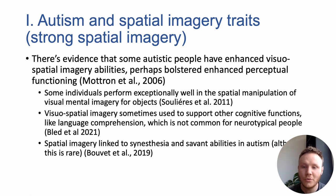This is shown through brain imaging and in the self-reported use of this style of thinking in everyday situations. There's also evidence that high spatial imagery abilities are linked to synesthesia and savant abilities in autism, although this is rare.